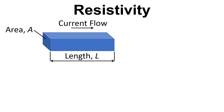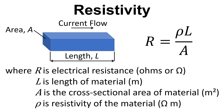Here we have a conductor with a current flowing through it. We also have a cross-sectional area and a length, and we can use the equation R equals rho L divided by A to work out the resistance. R is the electrical resistance in ohms, L is the length of the material, A is the cross-sectional area of the material, and rho is the resistivity of the material.